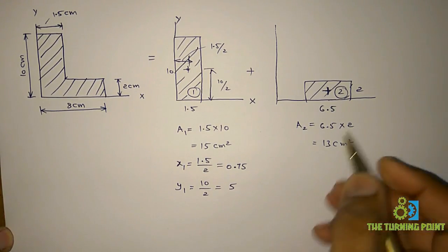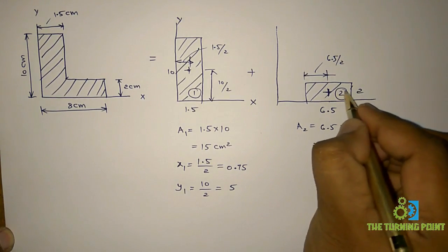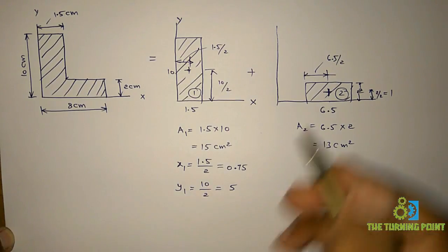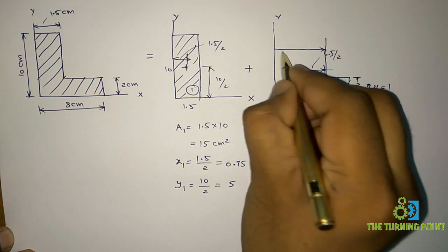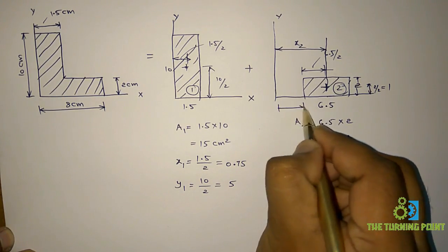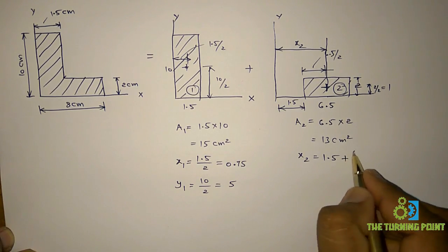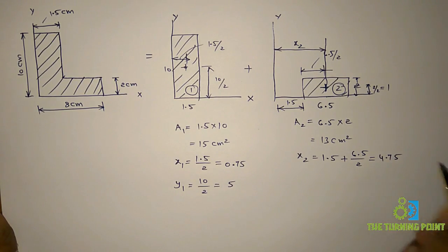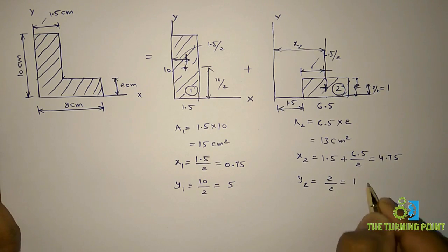Now let us find the centroidal coordinates for the second geometry. X2 is base divided by 2: 6.5 divided by 2. The x coordinate is the perpendicular distance from the y-axis. This y-axis is here, so x2 equals 1.5 plus 6.5 divided by 2, which is 4.75. Y2 is the perpendicular distance from the x-axis: height divided by 2 is 2 divided by 2, which is equal to 1 centimeter.